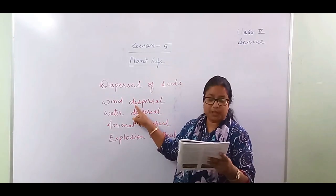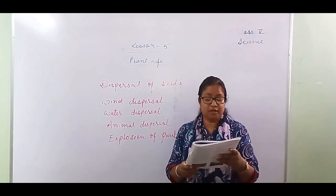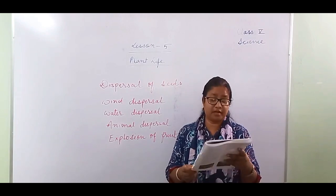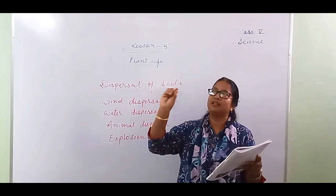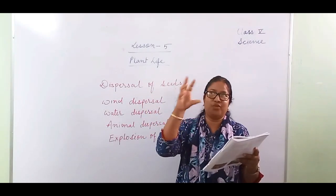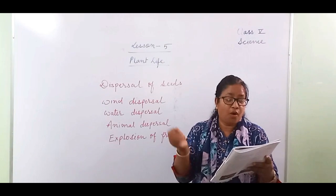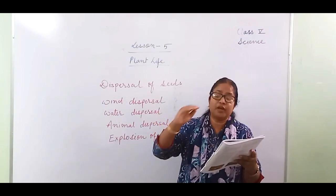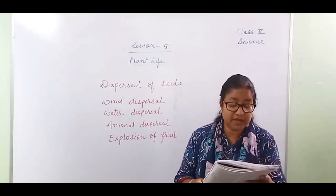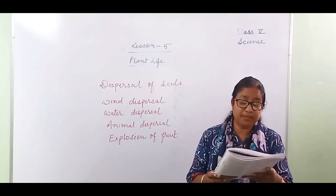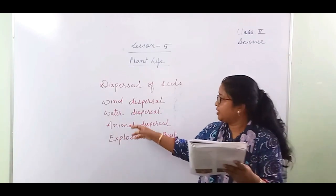Wind dispersal: seeds scattered by wind are usually small and light. Dandelions and cotton seeds have long, fine hair surrounding them. Sometimes in the classroom you see a small feather-like thing floating — that is actually a seed, not a feather. Dandelion seeds are very light, which is why they fly. Some seeds, such as maple and drumstick, have wings that help them float in air.